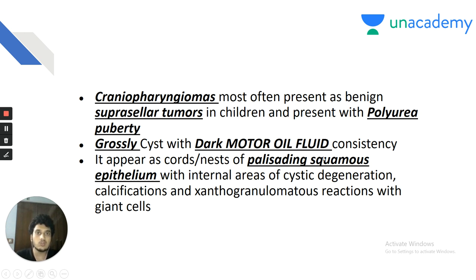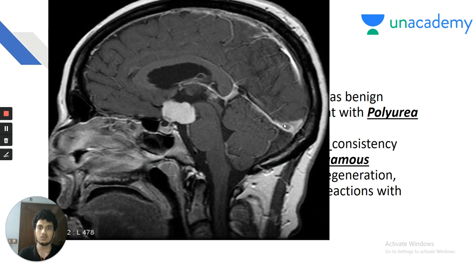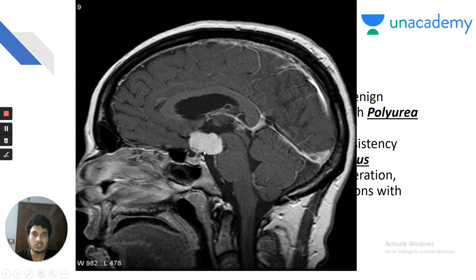Craniopharyngioma presents with internal cystic degeneration, calcification, and xanthogranulomatous reactions. On CT, suprasellar calcification with a rim of calcification is classical. Craniopharyngioma causes polyuria or central diabetes insipidus — the pituitary gland doesn't make enough ADH, so kidneys produce a lot of urine. ADH is involved in water absorption from collecting duct and distal DCT; when not absorbed, urine volume increases and urine osmolality decreases.